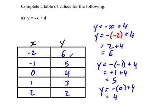And when you plot these points, the first one is negative 2, 6. Negative 1, 5. 0, 4. 1, 3. And 2, 2.